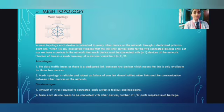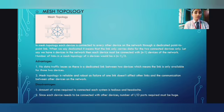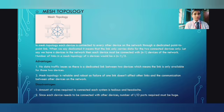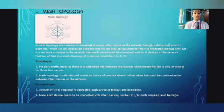The next topology is mesh topology. In mesh topology, each device is connected to every other device on the network through a dedicated point-to-point link — dedicated meaning the link only carries data for those two connected devices. If there are n devices in the network, each device must be connected with n minus one other devices. The number of links in a mesh topology of n devices would be n(n-1)/2. Advantage: no data traffic issues since there is a dedicated link between each pair of devices. Disadvantage: the large amount of wiring required to connect each system is tedious and complex.